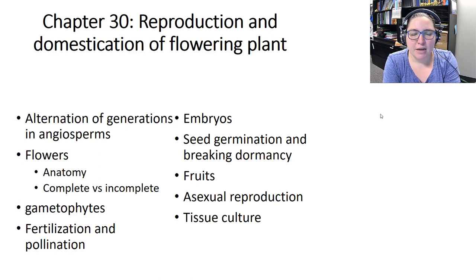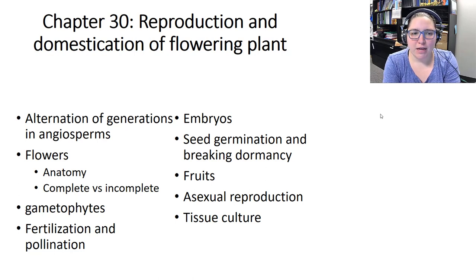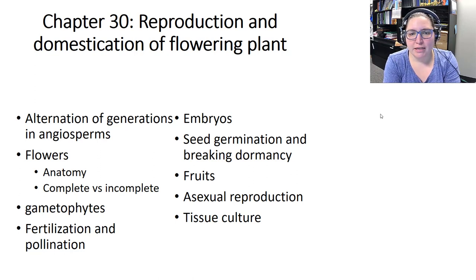We're in chapter 30 now, which is the third chapter in our plant unit, and we're going to talk about reproduction and domestication of flowering plants. Again, we're doing another chapter focusing on angiosperms.